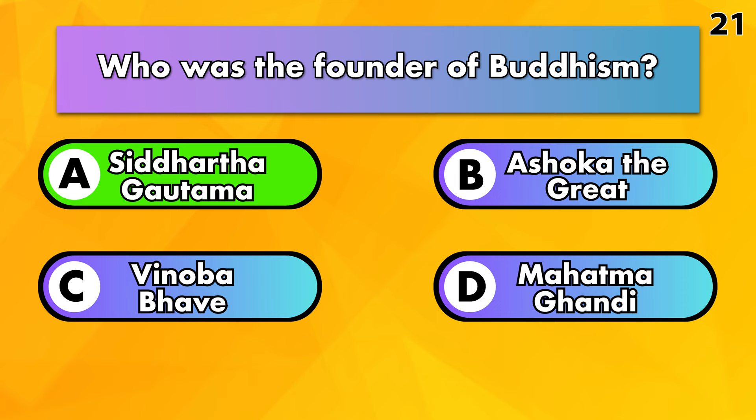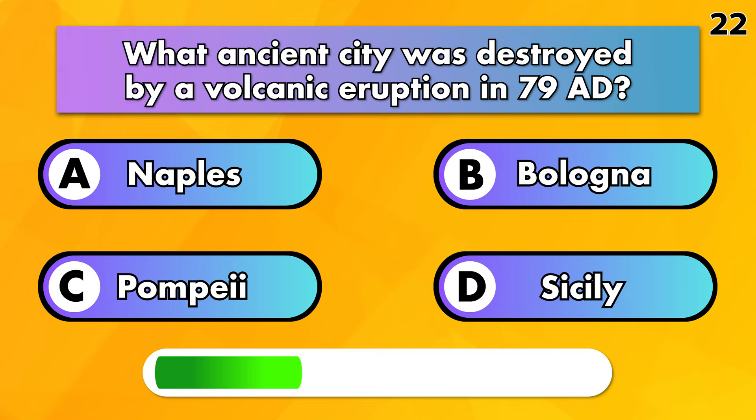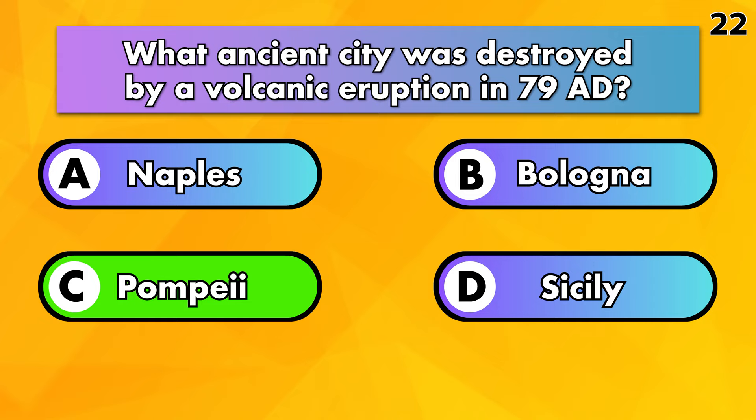What ancient city was destroyed by a volcanic eruption in 79 AD? Naples, Bologna, Pompeii or Sicily? The answer is Pompeii.